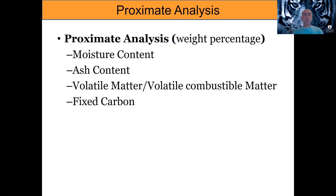Woody biomass typically has a smaller ash percentage, anywhere from about half a percent up to maybe 30 to 40 percent if you're talking about municipal sludge or poultry litter. Another property we measure is volatile matter or volatile combustible matter, which gives you an idea of how much biomass can be volatilized at a given temperature and the temperature range needed to operate certain processes. Finally, we measure fixed carbon — the amount of biomass remaining after volatilization. It doesn't mean it's all carbon, but that's the terminology we use.